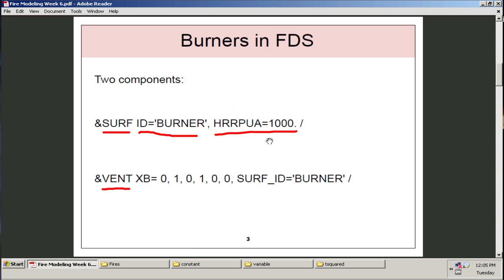That's the important parameter in this namelist. It's also important that the surf ID matches here on the vent line. So you'll see they're both named burner. The second line is the vent line. This is what actually prescribes the geometry for the vent. In this case, there's six numbers. We have 0 to 1 in the x direction, 0 to 1 in the y direction. So we have a 1 by 1 meter burner, which is 1 meter squared. And it's located on a plane at 0.0. This could also be at some elevation, but since those two numbers match in the z direction, it's going to be a plane in the z direction. So we have the XB and then we have the surf ID burner. So this tells it to look for the surf that has the ID burner and use those parameters for the vent.